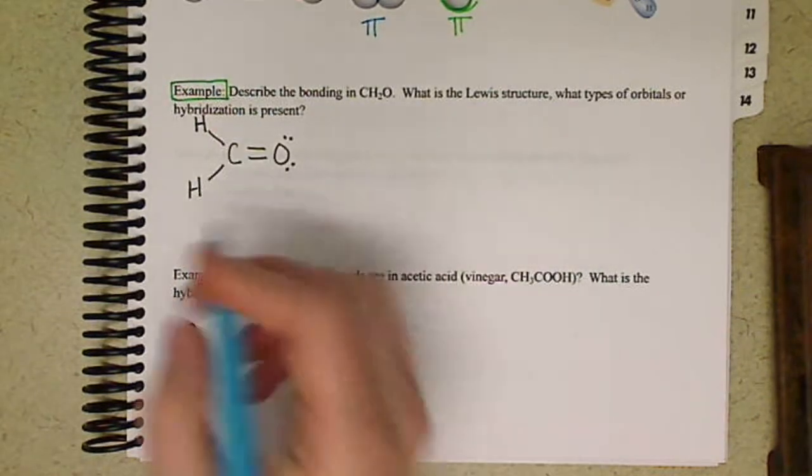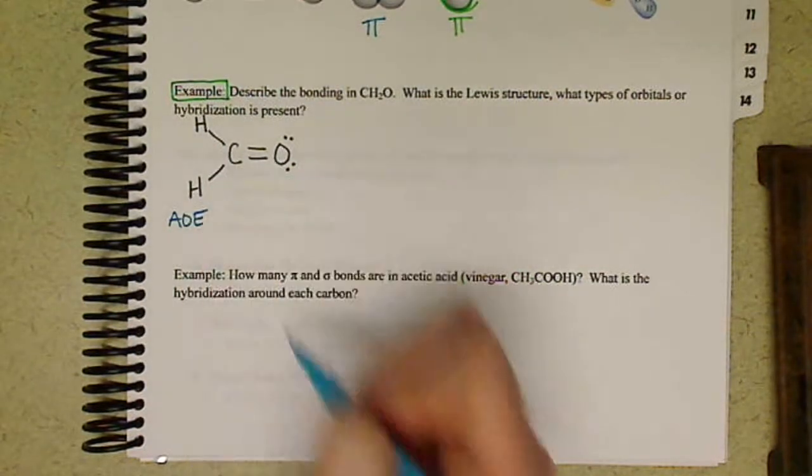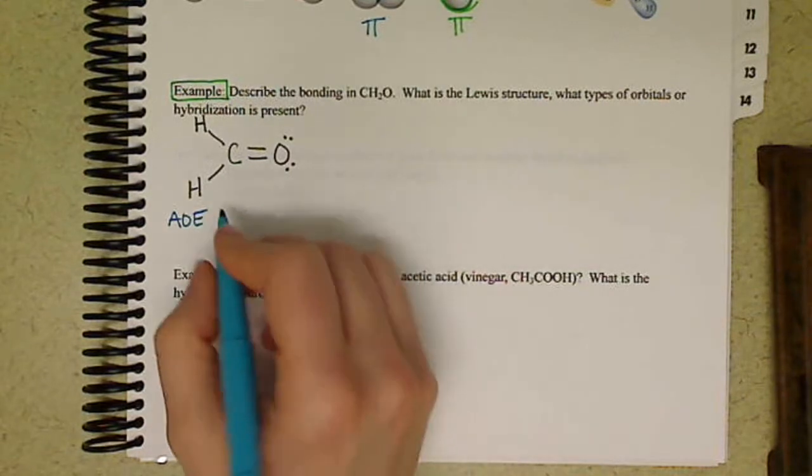So from previous sections, we would be able, or previous knowledge, we would know the arrangement of electrons. We have one, two, three arrangement of electrons, so that's trigonal planar.